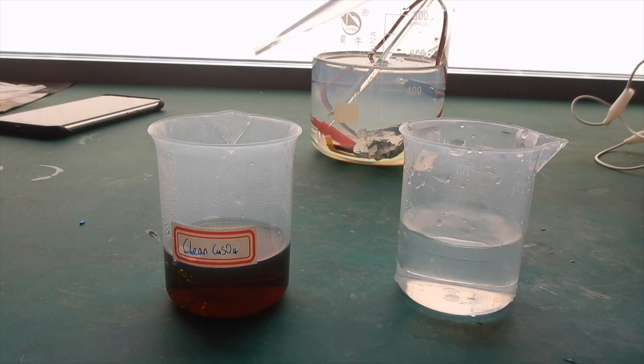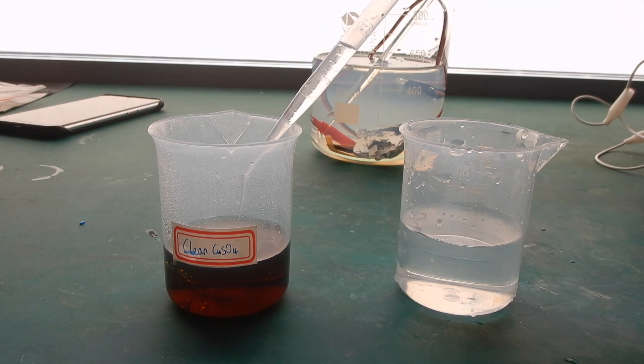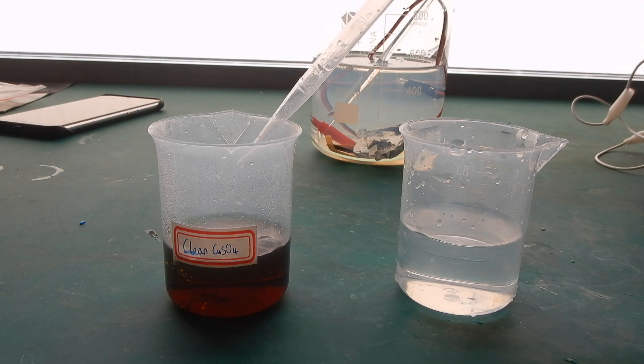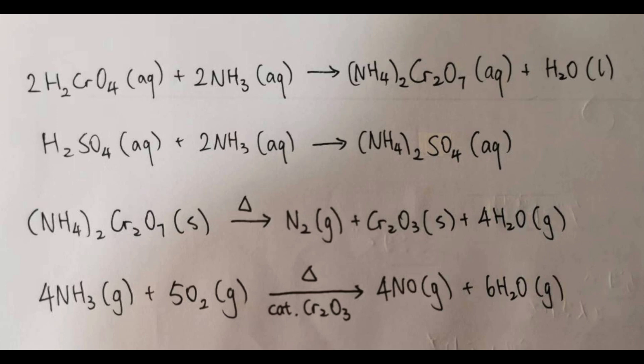I carefully added ammonia dropwise to the chromic acid solution, and kept checking the pH until it reaches 3 to 4. Obviously, the pH papers were disposed in the thiosulfate. Here, I am neutralizing the acid in the solution, which are chromic acid and sulfuric acid, with ammonia, to produce the ammonium salts.